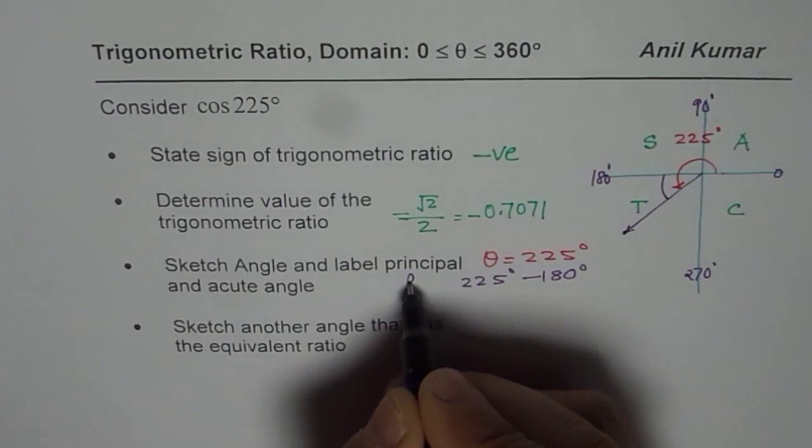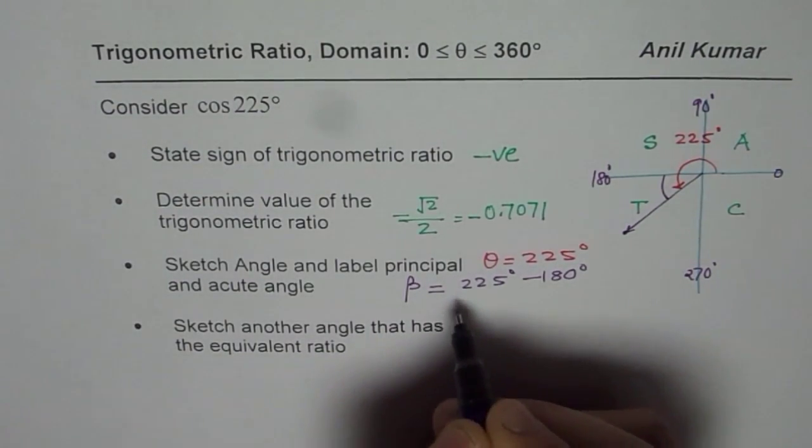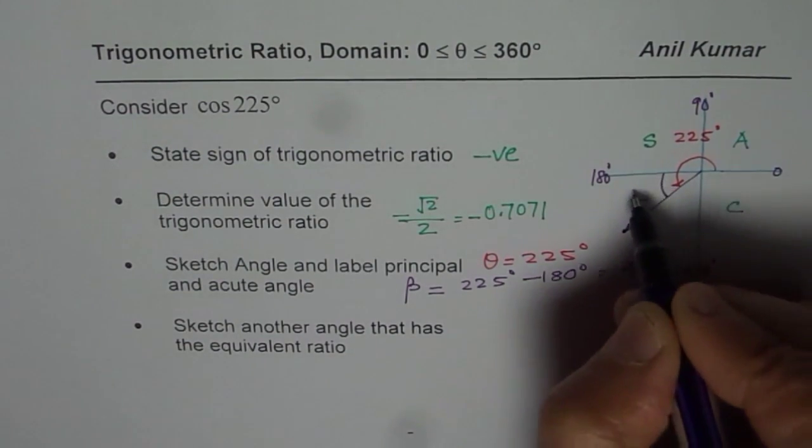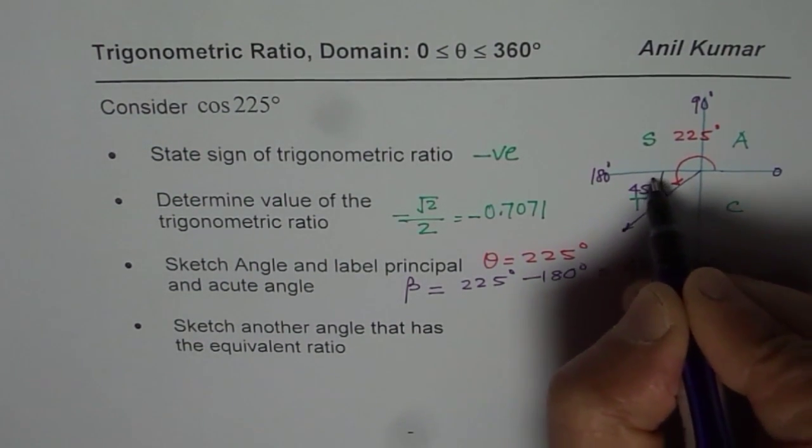it is 225 degrees minus 180 degrees. So, that is the acute angle beta for us. So, once you do that, you get 45 degrees. So, that becomes the acute angle 45 degrees.